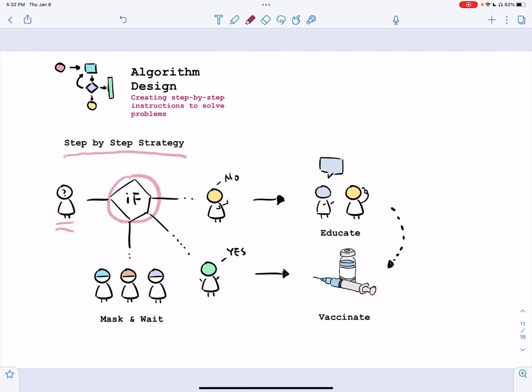If this person belongs to blue, brown, or purple group, they have to mask up and wait. Otherwise, if they're of the green group, they're already open to vaccines. Let's get them vaccinated. If they're from the yellow group, then maybe we have to do some education informing campaign, and maybe then they will be open to get vaccinated.